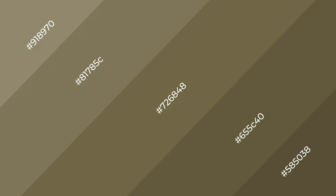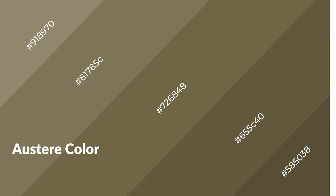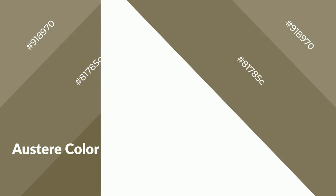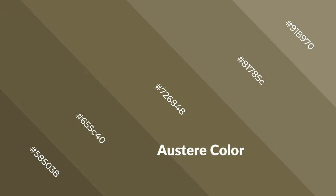Austere is a warm color and it emits cozier and active emotions. Warm colors are symbols of warmth, fire, heat, and sunshine. It also evokes joy, passion, love, and even anger emotions. You can see them used in restaurants and gyms.